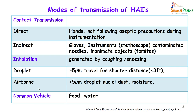In indirect methods, transmission is through gloves, instruments like stethoscopes, contaminated needles, or after touching inanimate objects. Inhalation is generally generated by coughing or sneezing or the presence of organisms in the air.